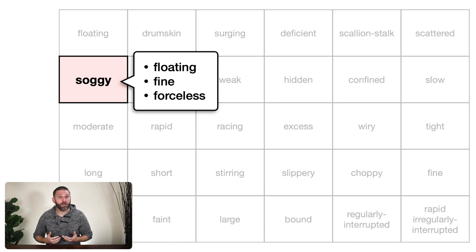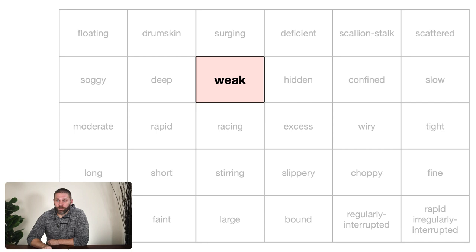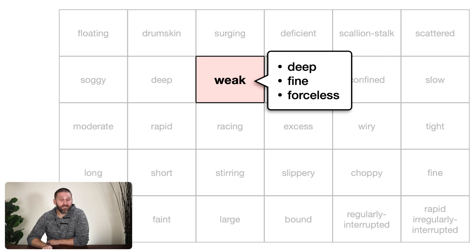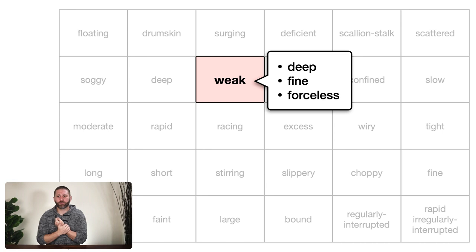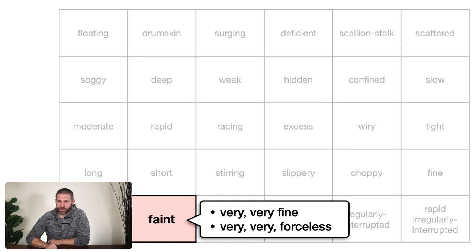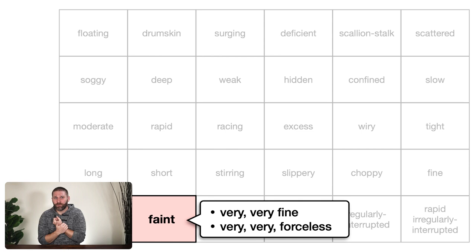A weak pulse means deep, fine, and forceless. If you have to push in with heavy pressure to feel the pulse near the bone, the diameter is narrow, and it's relatively forceless — that's a weak pulse. A faint pulse is very, very fine in diameter and very, very forceless — almost imperceptible against your fingers. So these compound pulse images are really just combinations of the simpler qualities you've already been feeling for.